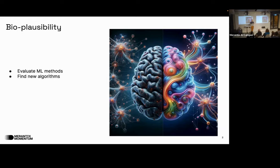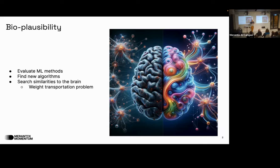The idea is that by comparing to the brain, we can find new algorithms that work better than current ones. For example, GPT uses a lot of training data to learn what a child learns in far fewer examples. The problem they look at is the weight transport problem: in backpropagation, you need the weights from the forward pass to calculate the gradient — but in the brain, weights are not shared between the forward and backward pass.